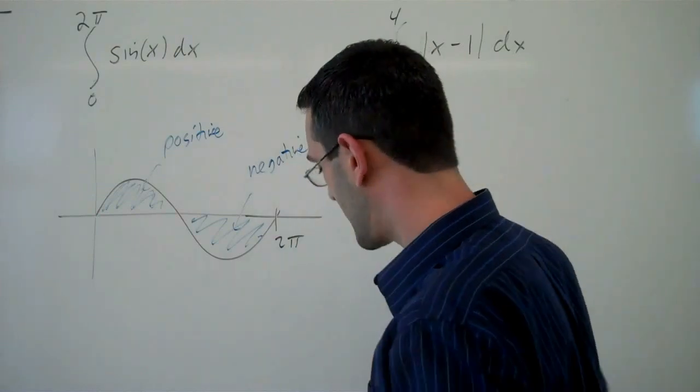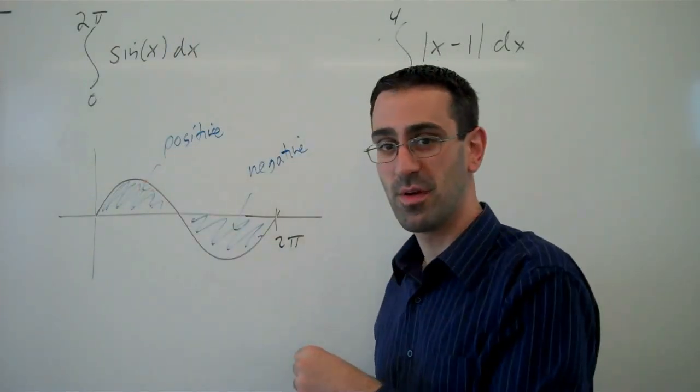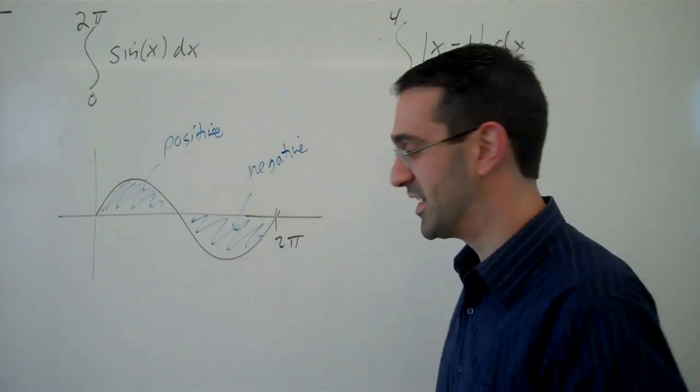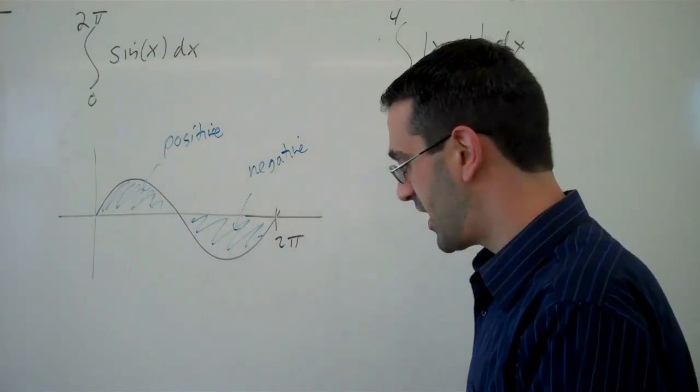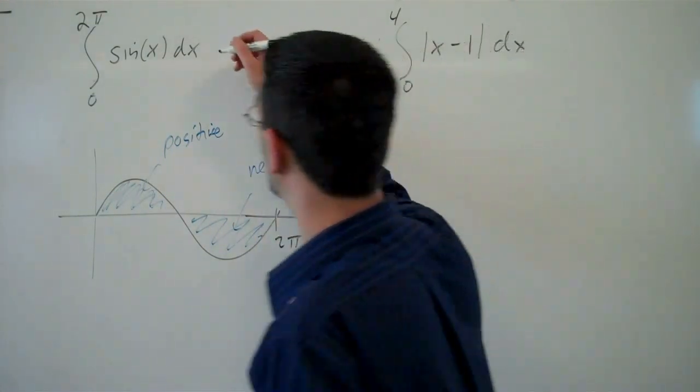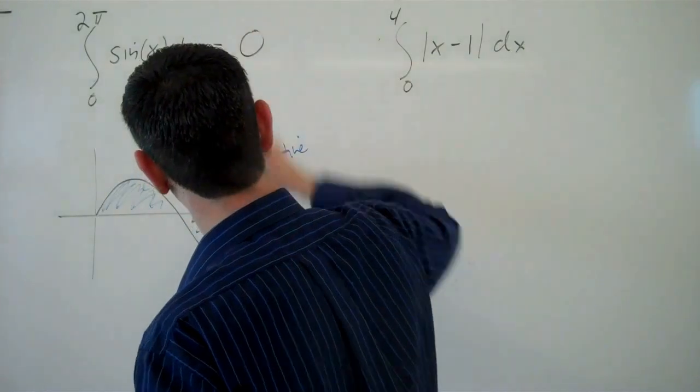And because the sine function is symmetric, this positive amount is going to be the same as this negative amount, all opposite of. And so when we combine the two together, the net area, the net signed area here, is going to be 0.